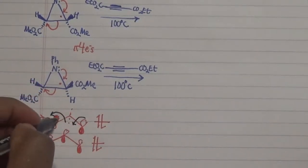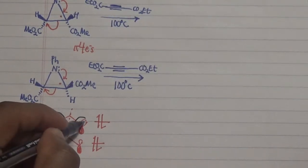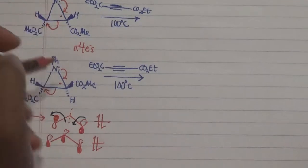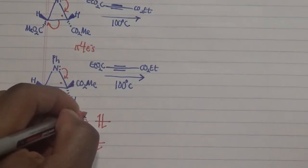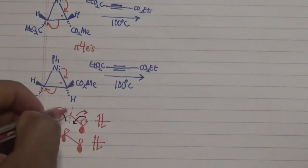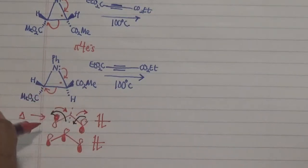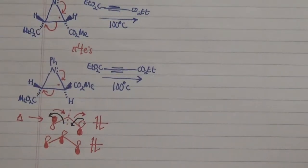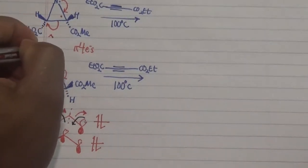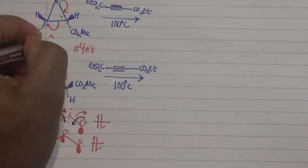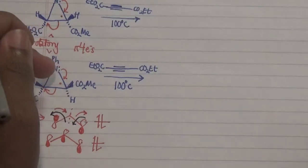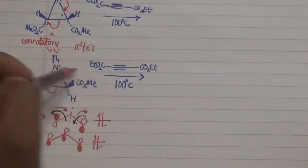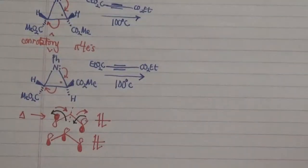To form our bond we have a conrotatory process where the head-to-head and tail overlap to form our sigma bond. However, if we want to break our bond — which is what we want here — we still have a conrotatory process but in the clockwise direction, and that leads to the breakage of our sigma bond. Both cases here involve a conrotatory process that leads to the breakage of our sigma bond, allowing us to proceed further and react this with that to form our intermediate.